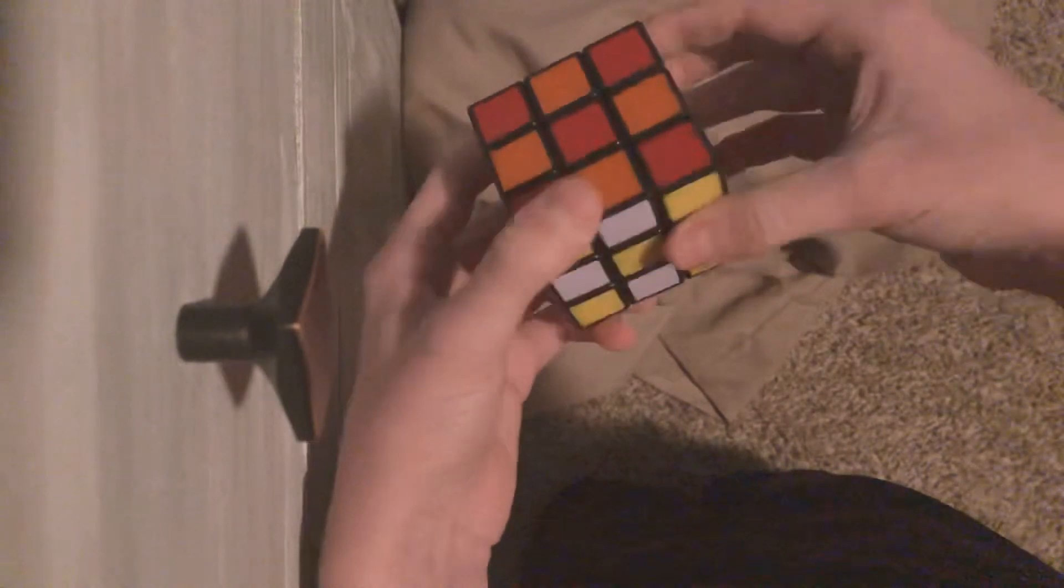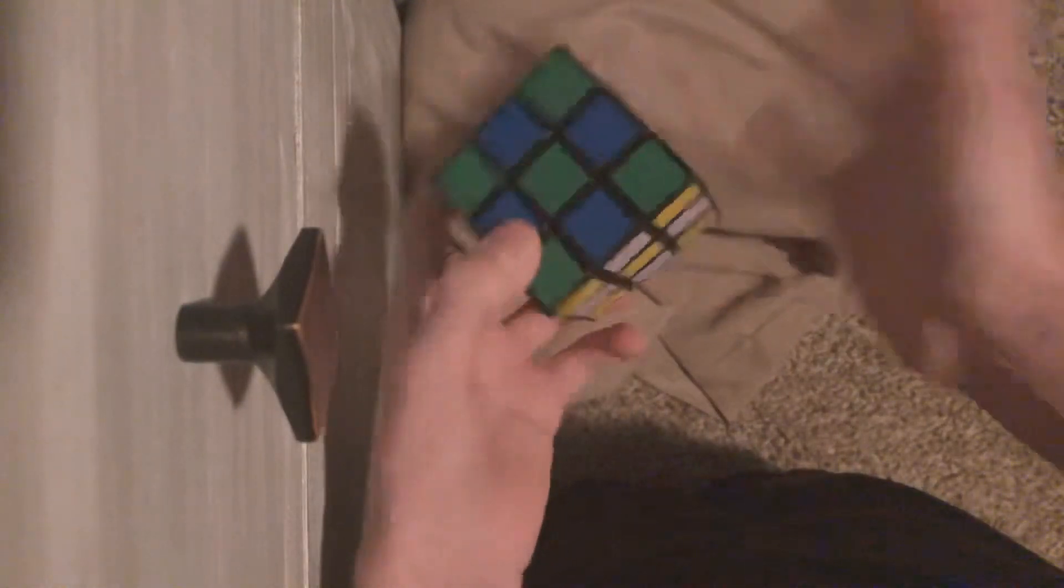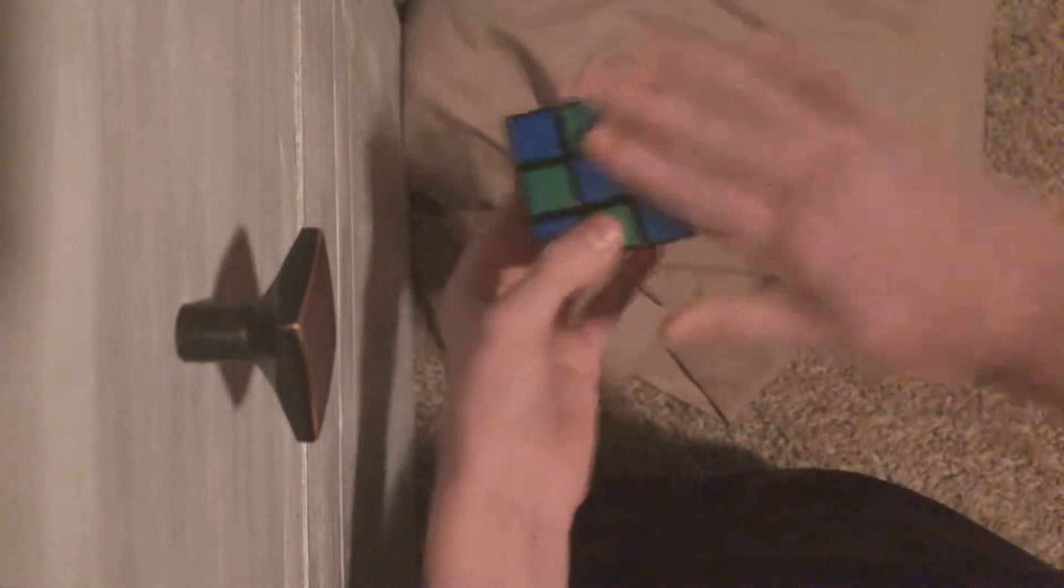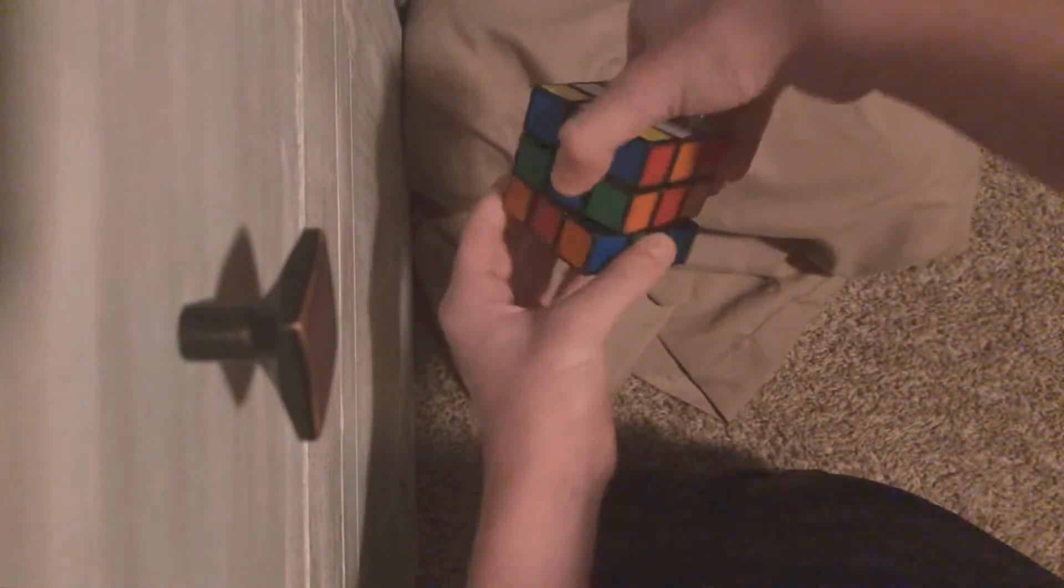You have your checkered board pattern on your Rubik's Cube. Now if you want to reverse it, here you go. I'm gonna go back to this piece again. What you're gonna do is go one...